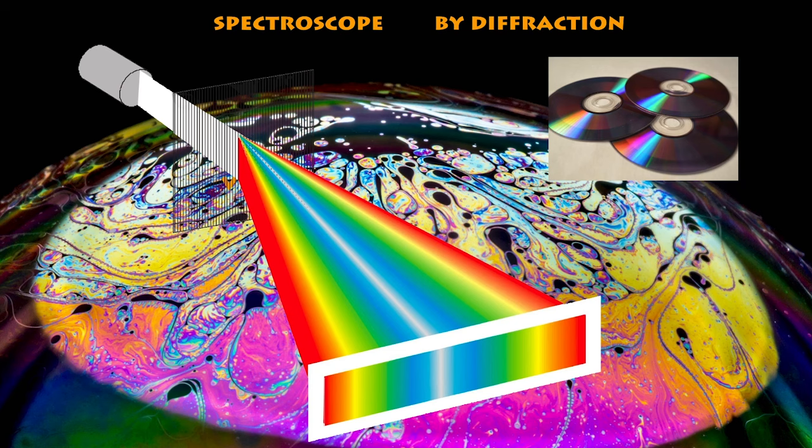But another way we can do it is what we call diffraction. Diffraction is when light interacts with a surface. In this case, what we have is a diffraction grating that spreads out the light. Our soap bubble is actually an example of diffraction. Our CD discs and DVD discs, which therefore have colors on them, is also an example of diffraction.